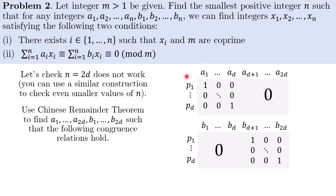So to show that n equals 2d does not work, I will need to produce the integers a1 to a2d, b1 to b2d, for which I can never find the x's satisfying the conditions. The way I will produce the ai and bi is as follows. I will pick a1 such that it is congruent to 1 mod p1 but congruent to 0 all the other primes. And I can always do this using the Chinese Remainder Theorem. On the other hand, for ad+i, what I will do is I will just pick something that is divisible by all the primes. For b's, I will do the reverse. b1 to bd will be something that is divisible by all the primes. Whereas bd+i will be congruent to 1 mod pi but congruent to 0 all the other primes.